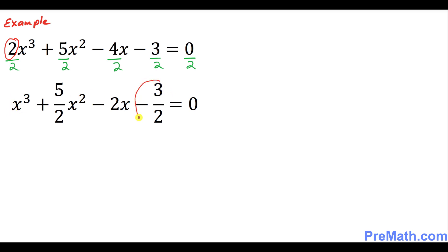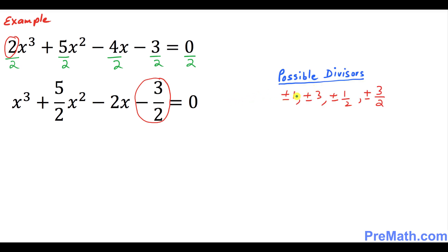The next step: I want you to look at the very last number, which is negative 3 over 2. We are looking for the possible divisors — the factors of this number. Our possible divisors turn out to be positive or negative 1, positive or negative 3, positive or negative 1 over 2, and positive or negative 3 over 2. The highest degree of this polynomial is 3, which means we must have at most 3 solutions.